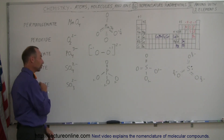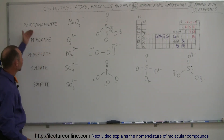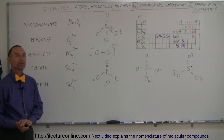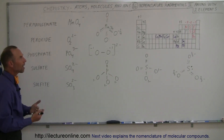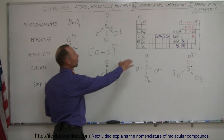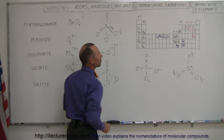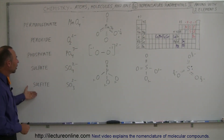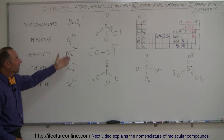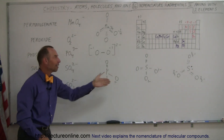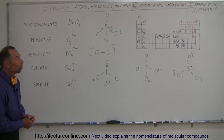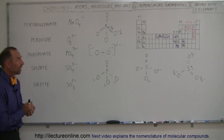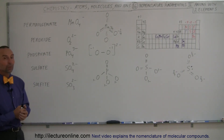So these are five more very common anions that bond with cations in all kinds of compounds. It's good to understand what they're called, what their formula is, and why they have the charge that they do. Hopefully that helps in understanding these anions made up of more than one element.